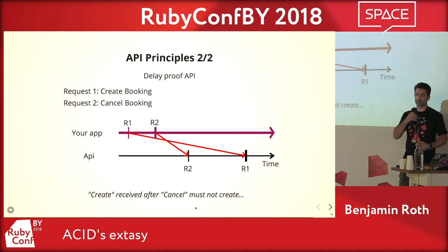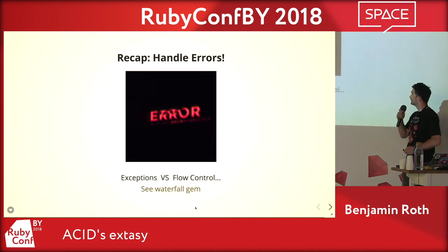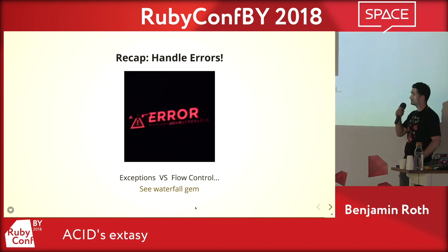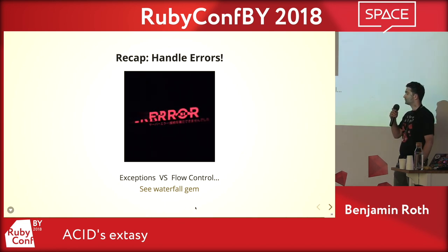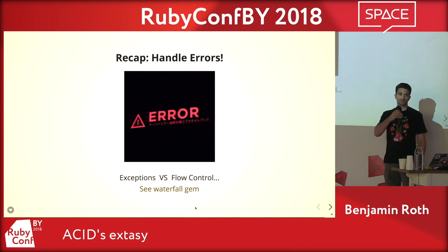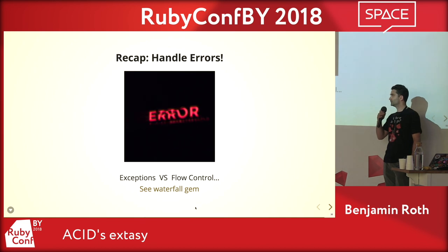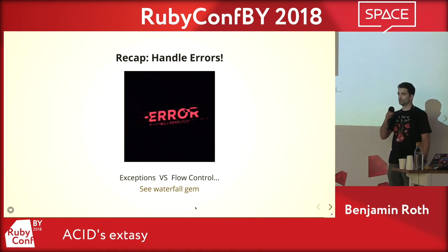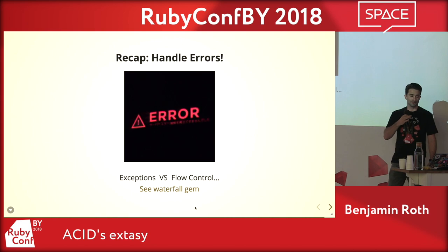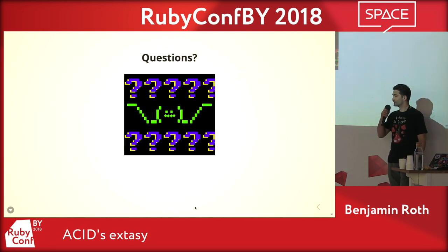I recommend watching that video — the link is in the presentation. To recap: we have no choice but to handle errors, because errors lead to other errors and it's our duty as engineers to ensure data consistency. There's a big debate in the Ruby community about whether to use exceptions or different flow control mechanisms — strong opinions, quite funny to explore. Nobody's right; just do as you feel and as your team decides. Now I'm open for questions, thank you.